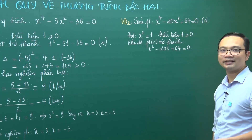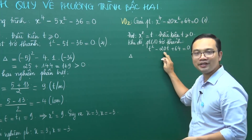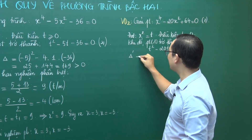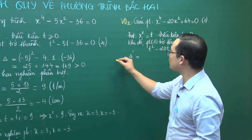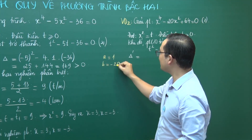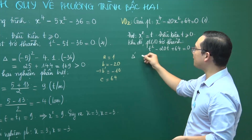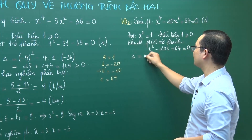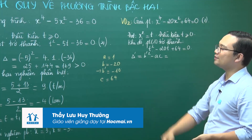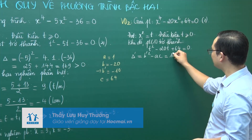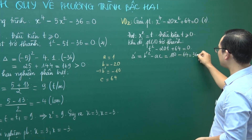Đây là phương trình bậc 2. Chúng ta tính Δ'. Hệ số: A = 1, B = -20 nên B' = -10, C = 64. Δ' = B'² - AC = (-10)² - 1·64 = 100 - 64 = 36 > 0. Phương trình có 2 nghiệm phân biệt.